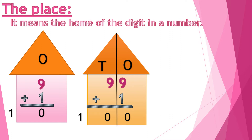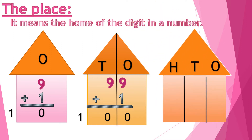Our home became very small again — it's a three-digit number. So we need another home. This home will have three rooms; we can call them three places: 1s, 10s, 100s. The greatest number I can put inside it is 999.